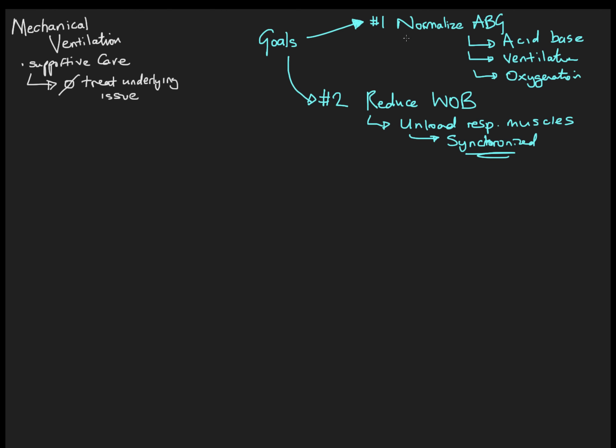So let's just quickly recap that. We want to normalize their blood gas from the perspective of their acid base, the ventilation portion of the blood gas and the oxygenation portion. And we want to unload those respiratory muscles, reduce that work of breathing and often take over entirely that work of breathing by letting the ventilator do the work rather than the patient.